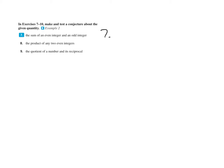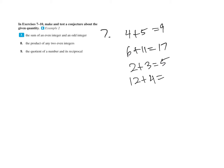Make and test a conjecture about the given quantity. Number seven: the sum of an even integer and an odd integer. Let's test a couple — an even and an odd makes 17. How about 2 plus 3? That gives five. And 12 plus 7 is 19. Notice that when we add an even and an odd, we get all odd numbers. So our conjecture is: if you add an even and an odd together, you get an odd answer.